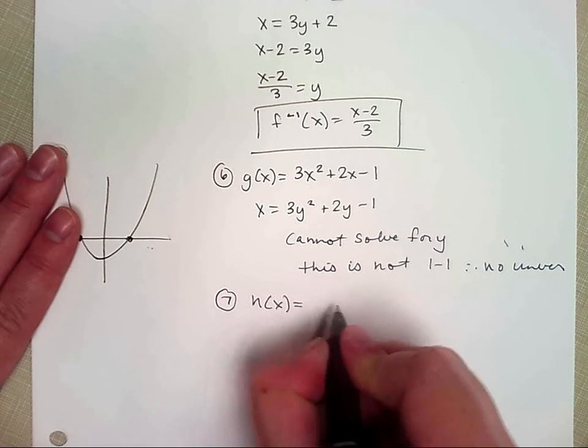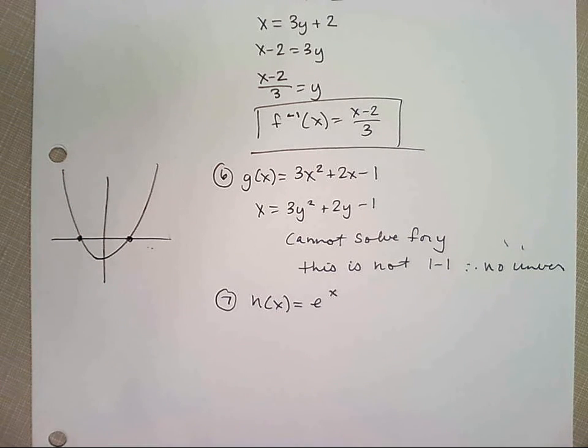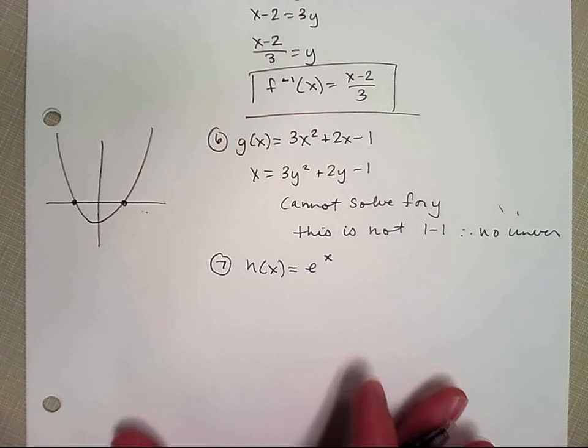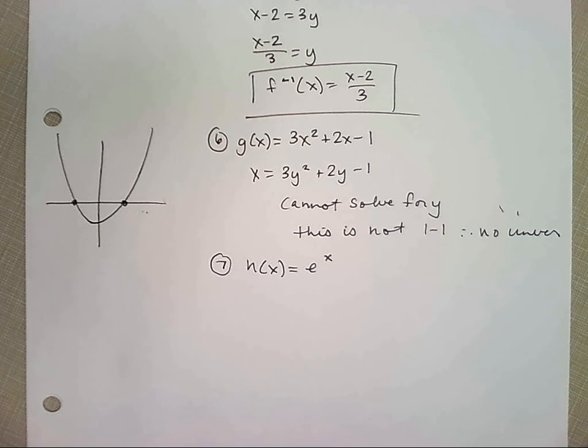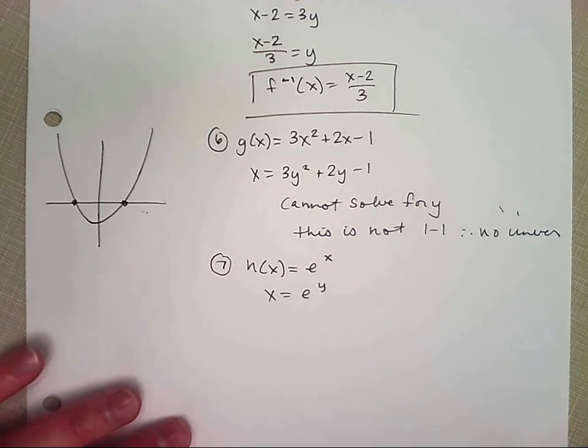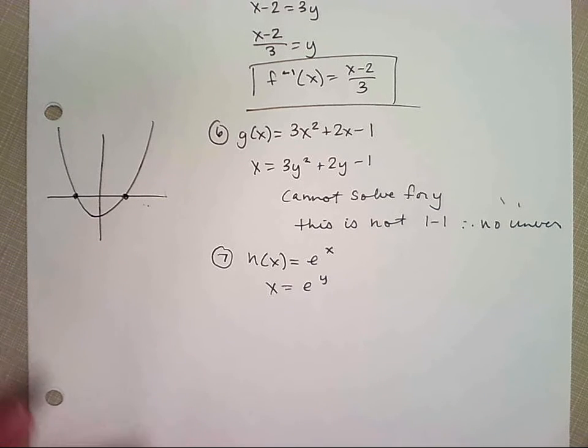7, h of x equals e to the x. If you want to check if it's 1 to 1, you can check on your calculator, right? Okay, 7, h of x equals e to the x. You guys, tell me what. We were supposed to graph this, too. We'll graph this one. So, what's the first step? Switch x and y. So, x equals e to the y. And I need to solve for y. How do I solve for y? If I ever have the variable in my exponent, what do I need to do?